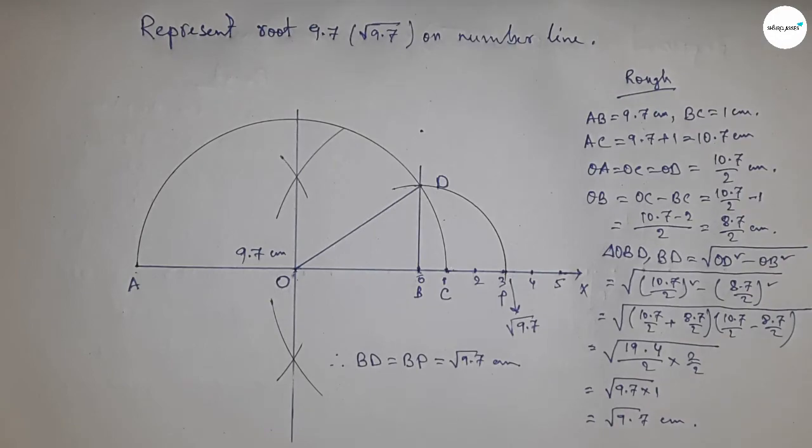Therefore, distances BD and BP are equal to root 9.7 centimeters. That's all. Thanks for watching. Please subscribe, like, and comment on my video.